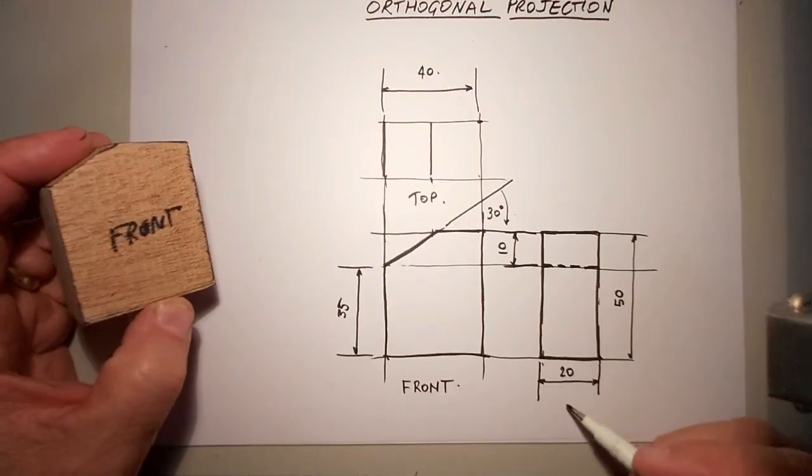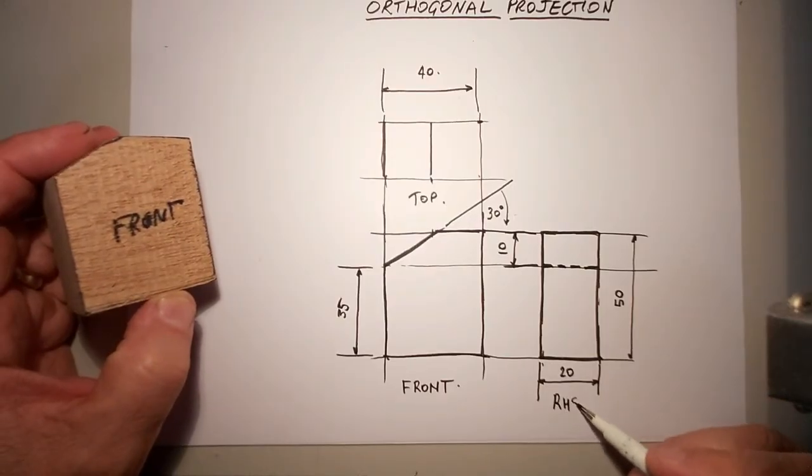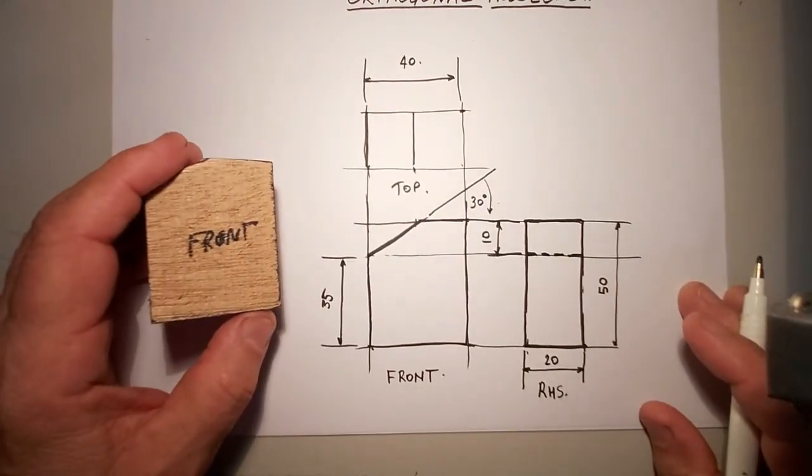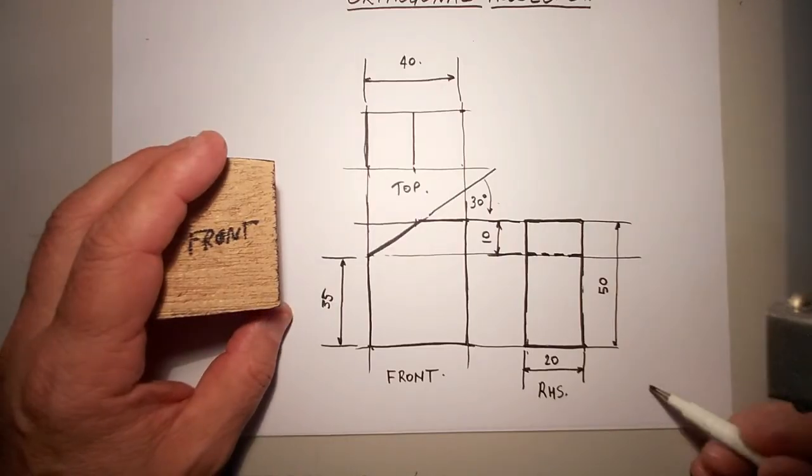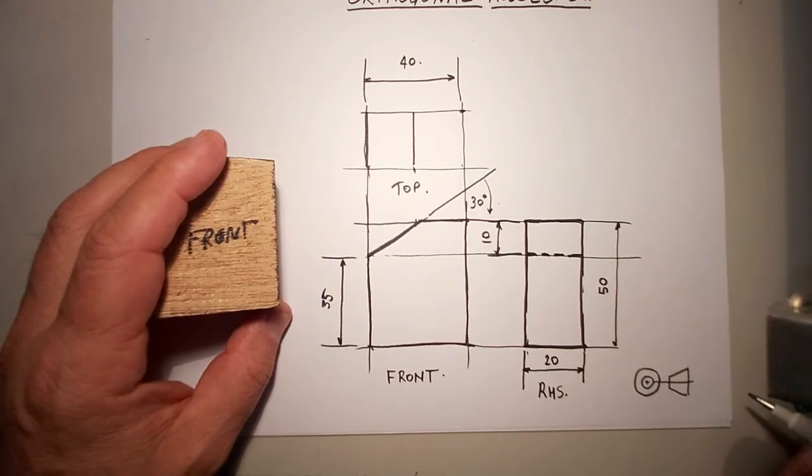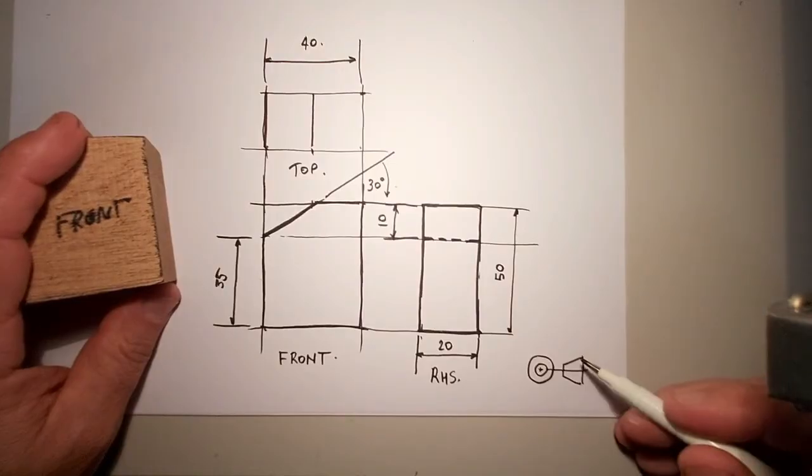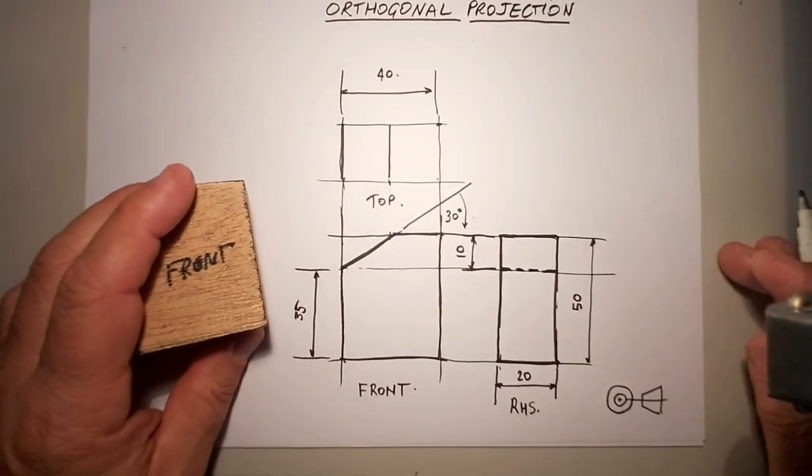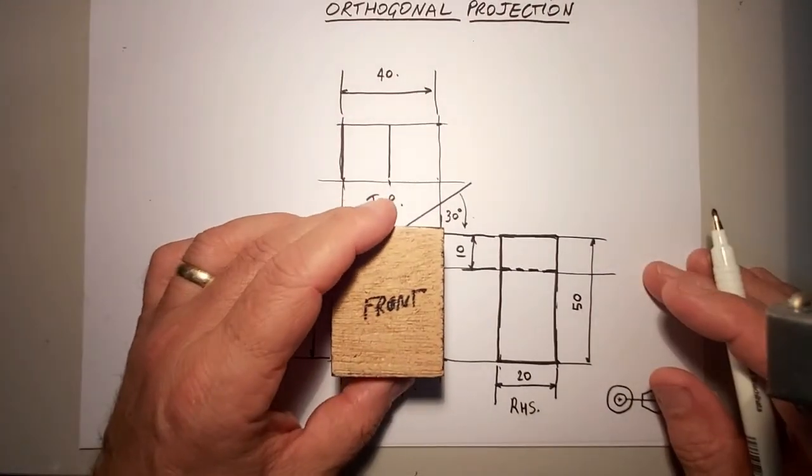Front, top, and we'll label this as right-hand side. And we would use the symbol for third angle projection, which will be this little symbol here. It's a cone. And that's what it looks like for third angle projection. That's how you do an orthogonal third angle projection.